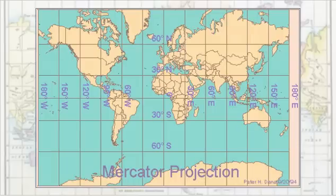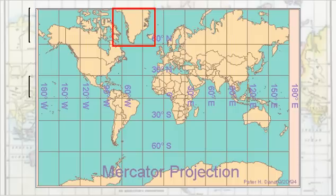The Mercator projection is a cylindrical projection, hence the use of our cylinder earlier. Notice the distance between lines of latitude increases the farther north and south you look from the equator. This is why Greenland looks about the size of Africa.